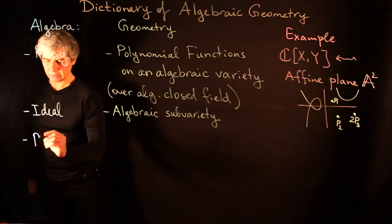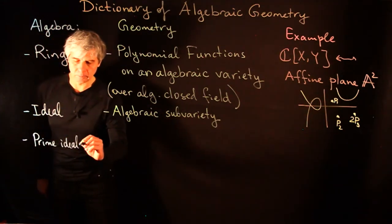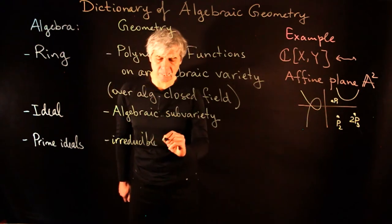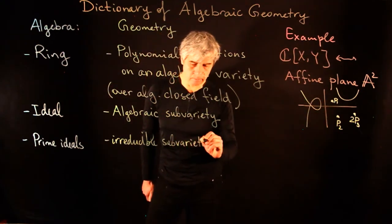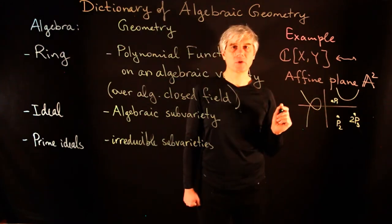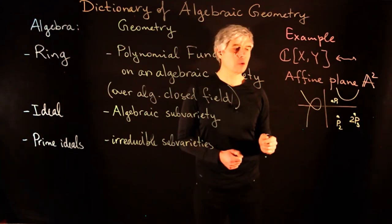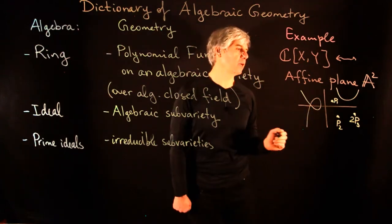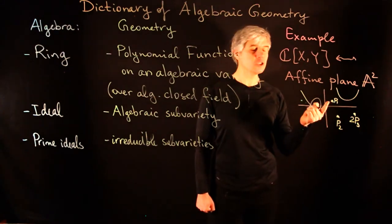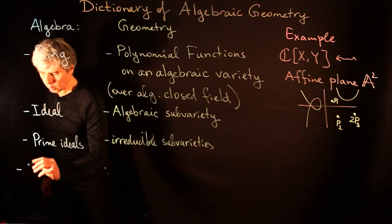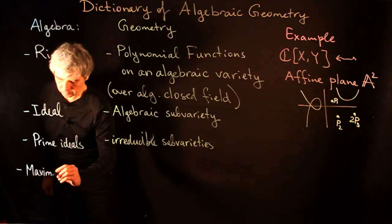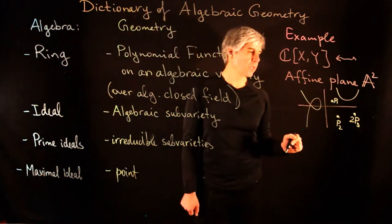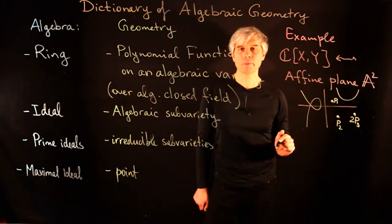Prime ideals correspond to irreducible subvarieties. If we take a single curve on the plane which cannot be decomposed into a union of two algebraic curves, then the polynomial functions vanishing on this curve form a prime ideal. Another example of a prime ideal is functions vanishing at a given point. Maximal ideals correspond to points.